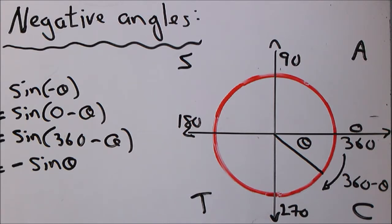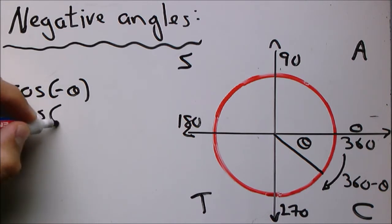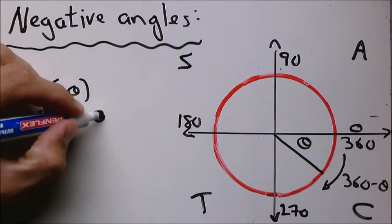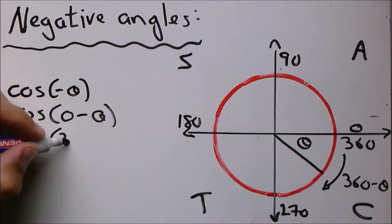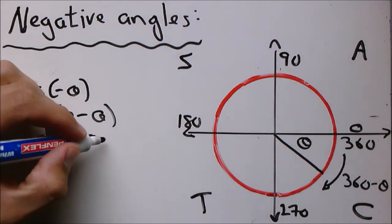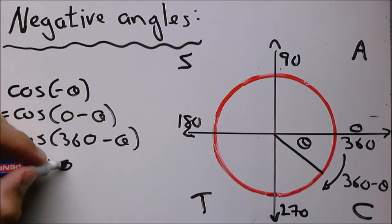We'll quickly do it with cos theta and tan theta as well. With cos negative theta we can say that it's the same as zero minus theta. We know it's the same as cos 360 minus theta. And in the fourth quadrant we know this will be positive cos theta.